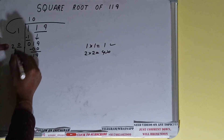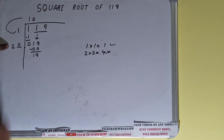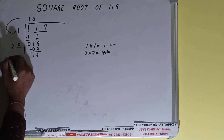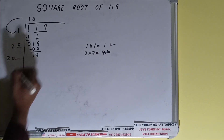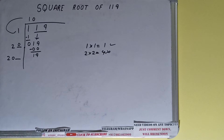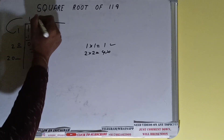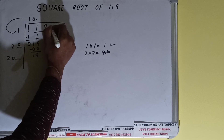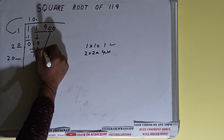Now take your divisor and add it with what you multiplied with: 20 times 0, so 20 plus 0 equals 20 again. Keep one extra digit. We need to make this number bigger to continue dividing, but there are no more pairs to bring down. So we take a decimal point and bring pairs of zeros down.